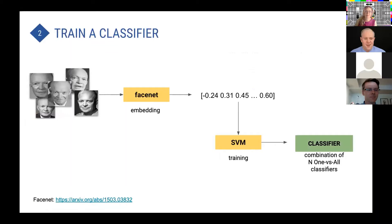The reason we use N one-versus-all classifiers instead of a multi-class classifier is because in this way the system scales up much more easily.